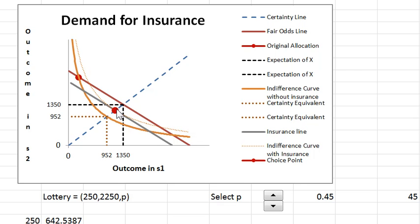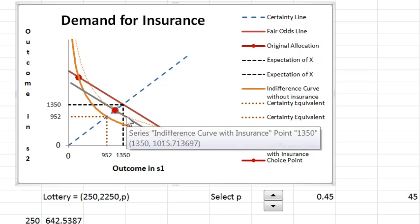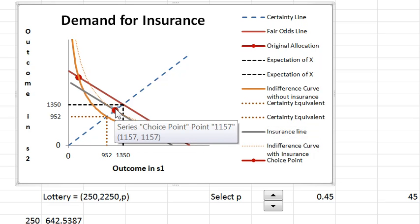So there's the insurance line. The consumer ends up choosing certainty under fair insurance. That is the result. The marginal rate of substitution actually equals the odds at the certainty point. And so does the fair insurance. Absolute value of the slope of the fair insurance line also equals the odds. So the tangency point happens at certainty.